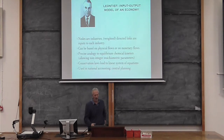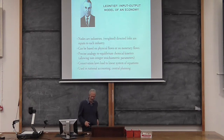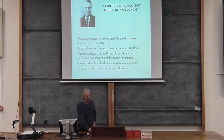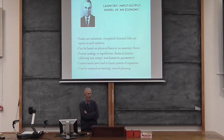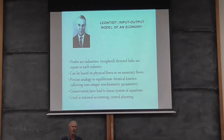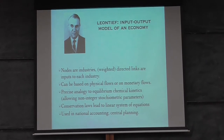We certainly aren't the first people to think about the distributed nature of production. The Leontief model, shown here, is a famous model in economics in which — if you're familiar with network descriptions — nodes are industries and weighted links are the inputs to the industries. We can actually make a precise analogy to chemical kinetics. Leontief originally used this for centralized planning of the economy: if you're Cuba and you want to get into a given industry, what other industries do you need to have to support that industry, and how much of it do you need?